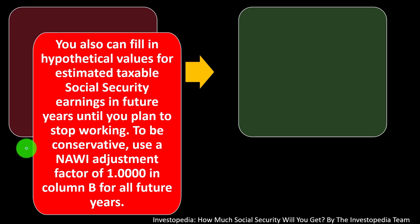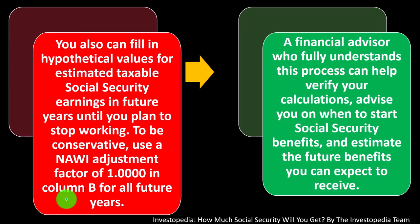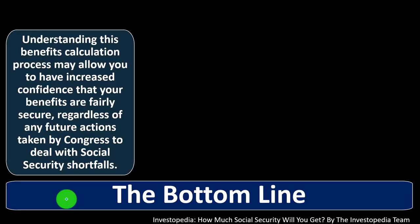You can also fill in hypothetical values for estimated taxable Social Security earnings in future years. If you're further out from retirement, you can say 'what if I worked a few more years?' and run projections in your Excel sheet. To be conservative, use a NAWI adjustment factor of one in column B for future years — meaning don't adjust higher for inflation, just keep it at one, which gives you the lower-bound conservative side of calculations. A financial advisor who fully understands this process can help verify your calculations, advise you on when to start Social Security benefits, and estimate the future benefits you can expect to receive.